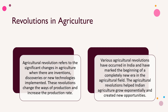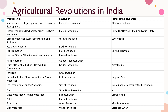Now we come to the first important part: the definition of revolution. In this slide we are going to see how agriculture revolutions have changed the scenario of Indian agriculture. Agriculture revolution refers to significant changes in agriculture when there are innovations, discoveries, or new technologies implemented. These revolutions change the way of production and increase the production rate, helping Indian agriculture grow exponentially and creating new opportunities.